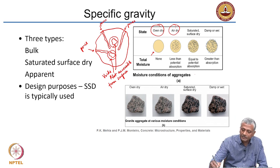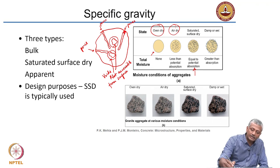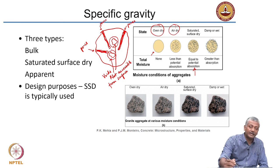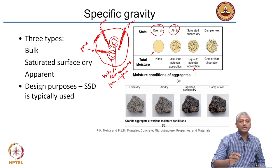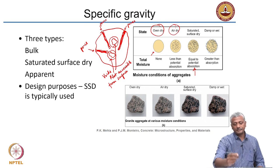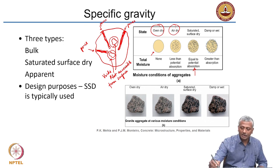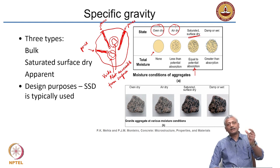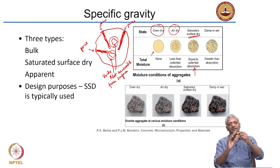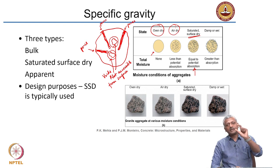At a given state, all the pores that are exposed at the surface get filled — that is called a condition where the aggregate is saturated, but there is no water clinging to the surface of the aggregate. That is why we call it saturated surface dry condition. You take an aggregate, put it inside water for 24 hours, take it out, use a towel to wipe the moisture from the surface, and then you get a saturated surface dry aggregate.